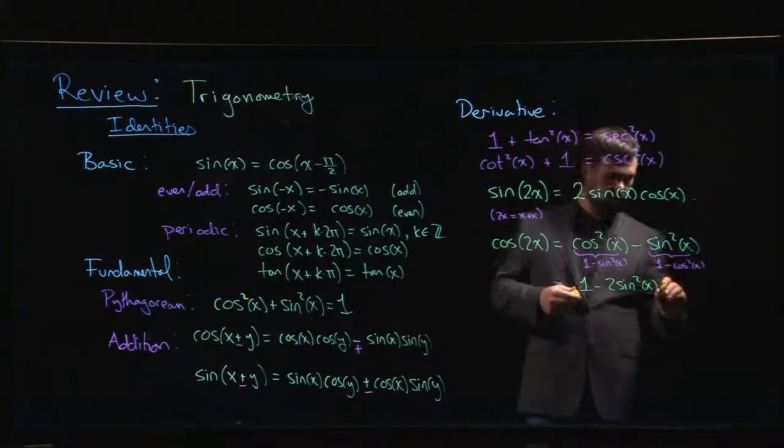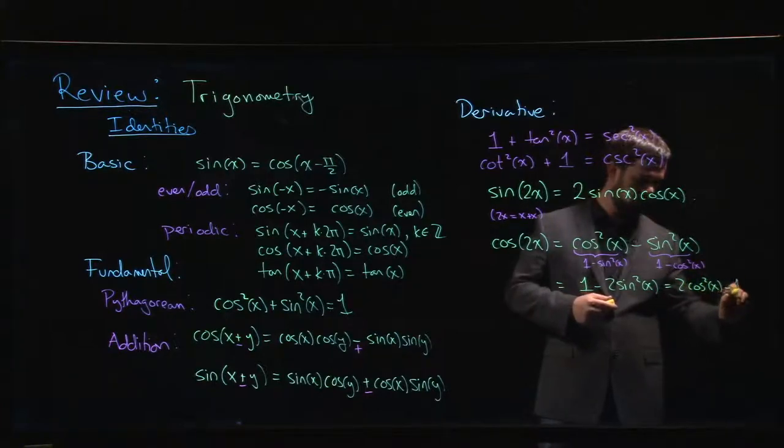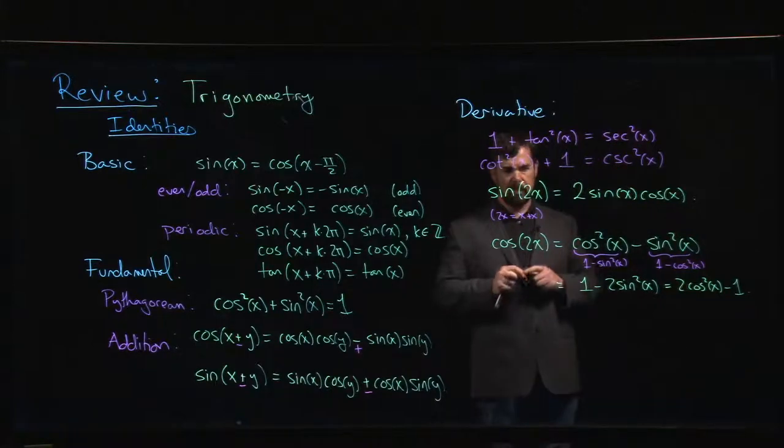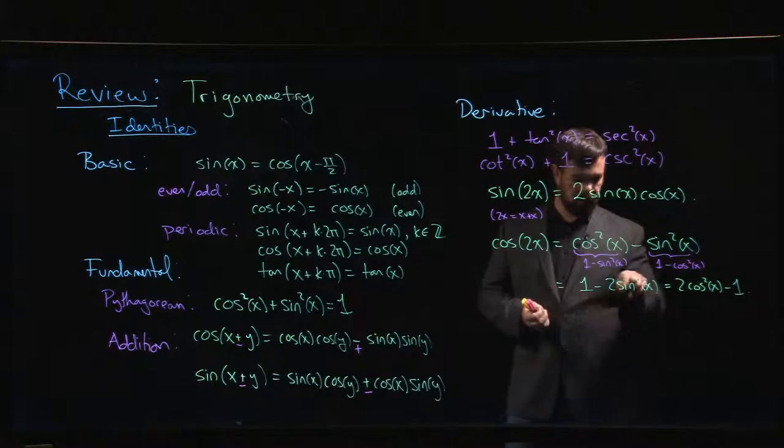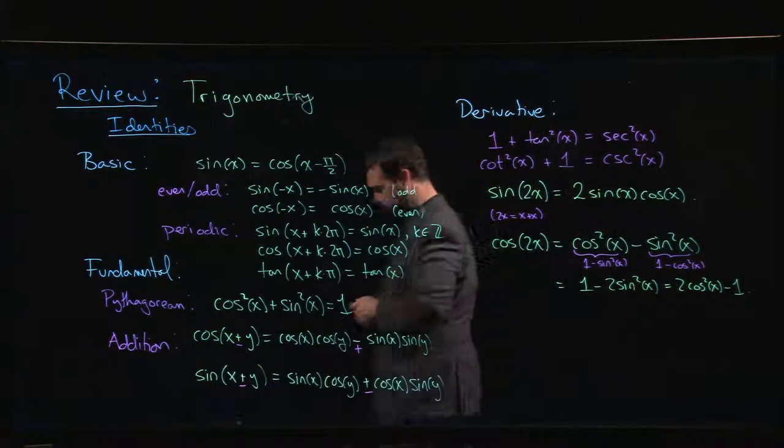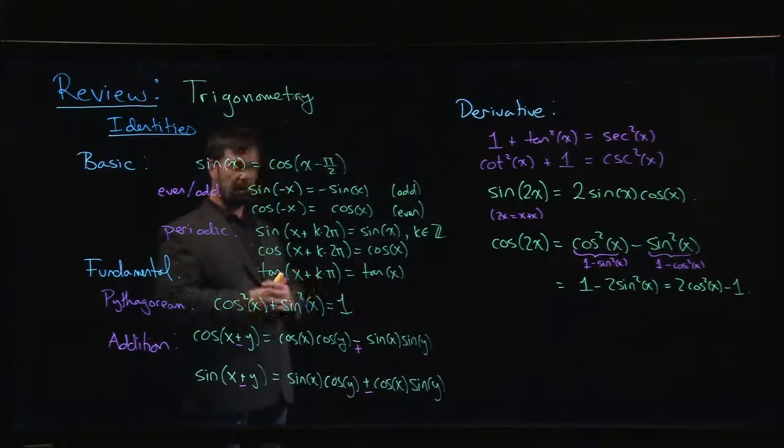then I can also write this as 2 cos squared x minus 1, and these can be useful because these lead to these so-called power reduction formulas. There are times where you're dealing with an odd power, or sorry, an even power of sine or cosine.